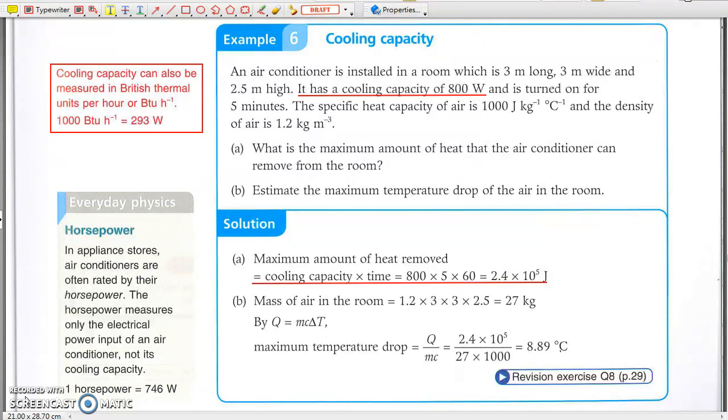In the market, cooling capacity expressed in BTU per hour or in kilowatt are actually the input electrical power, where one horsepower equals 746 watt.